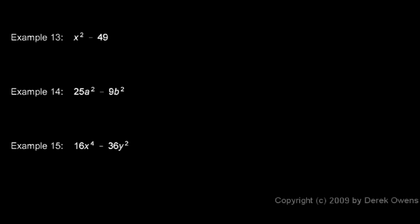Example 13, we have x² minus 49. Think in your mind, x² minus 7², and you recognize that as the difference of two squares. And so it factors as (x + 7)(x - 7).